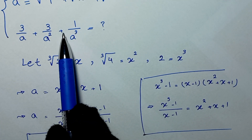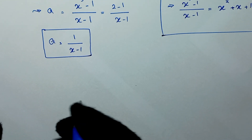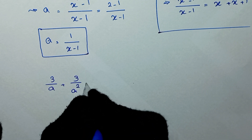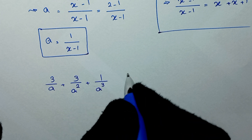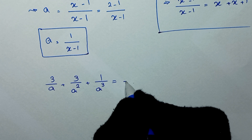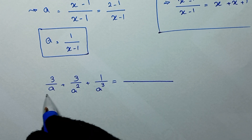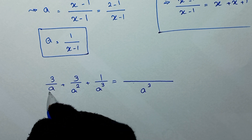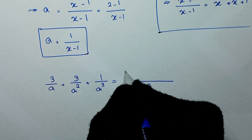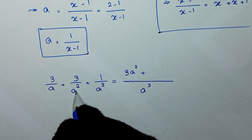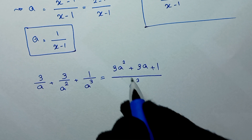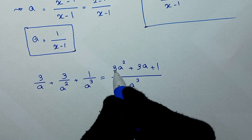We write 3 over a plus 3 over a squared plus 1 over a cubed. We add a common denominator, which is a cubed. For the first fraction we multiply numerator and denominator by a squared to get 3a squared; for the second fraction we multiply by a to get 3a; and the last term stays as 1. So the numerator becomes 3a squared plus 3a plus 1.